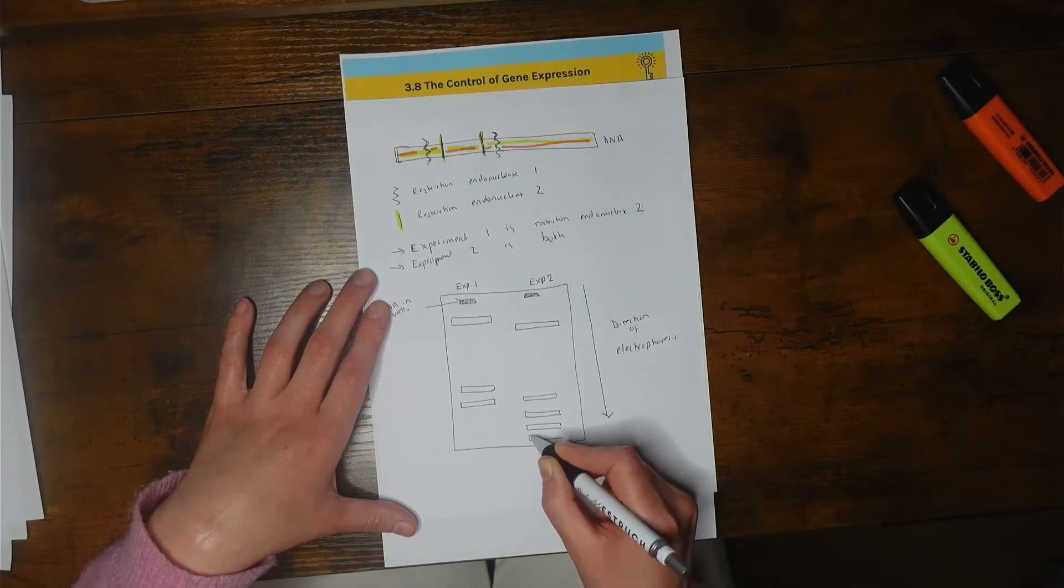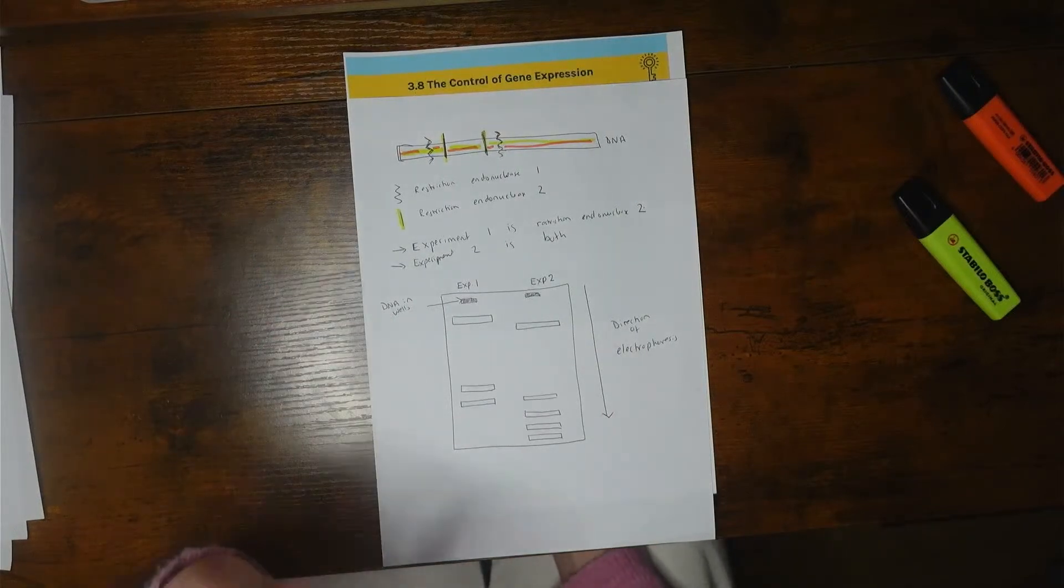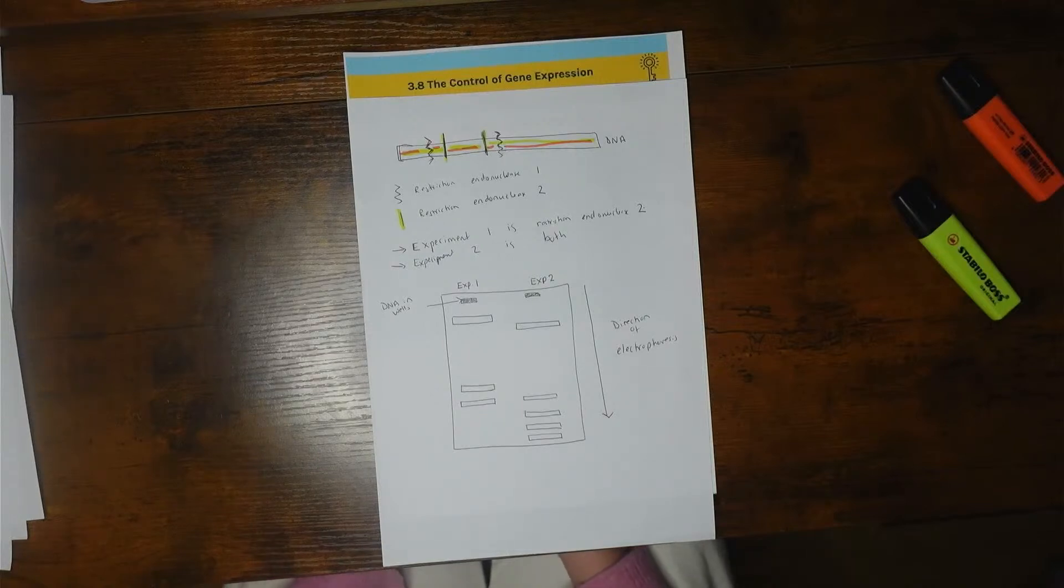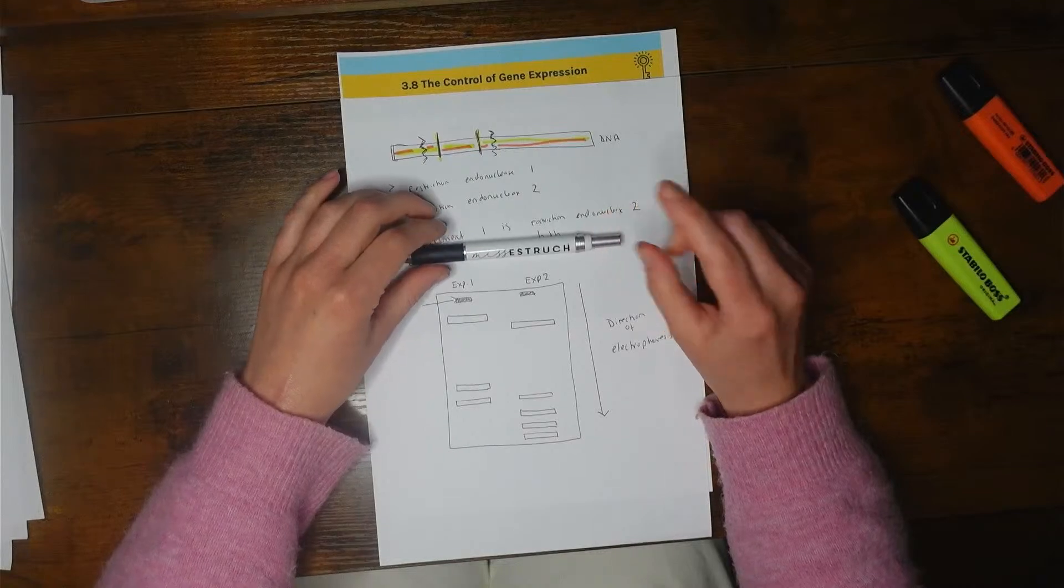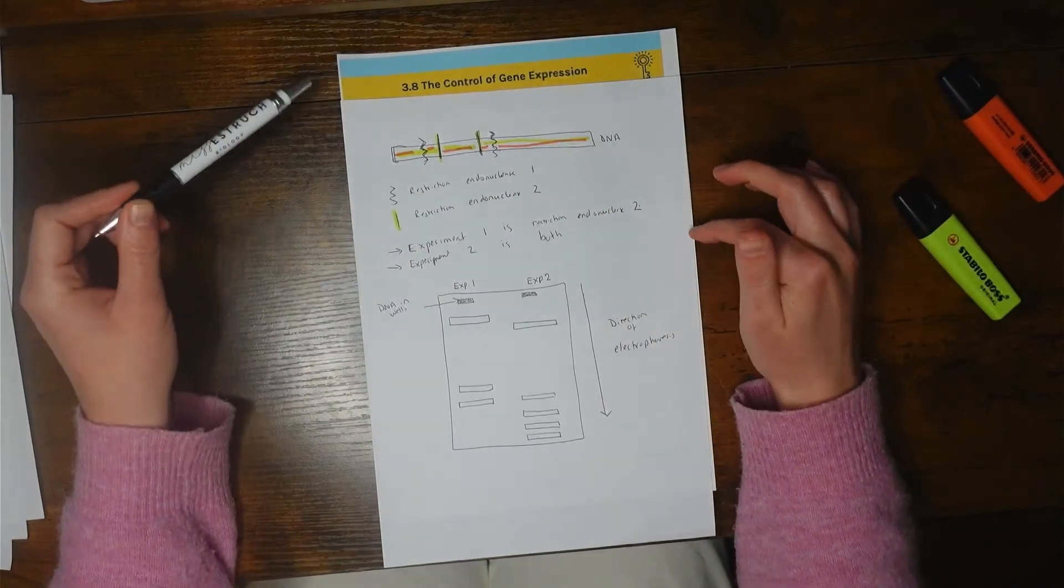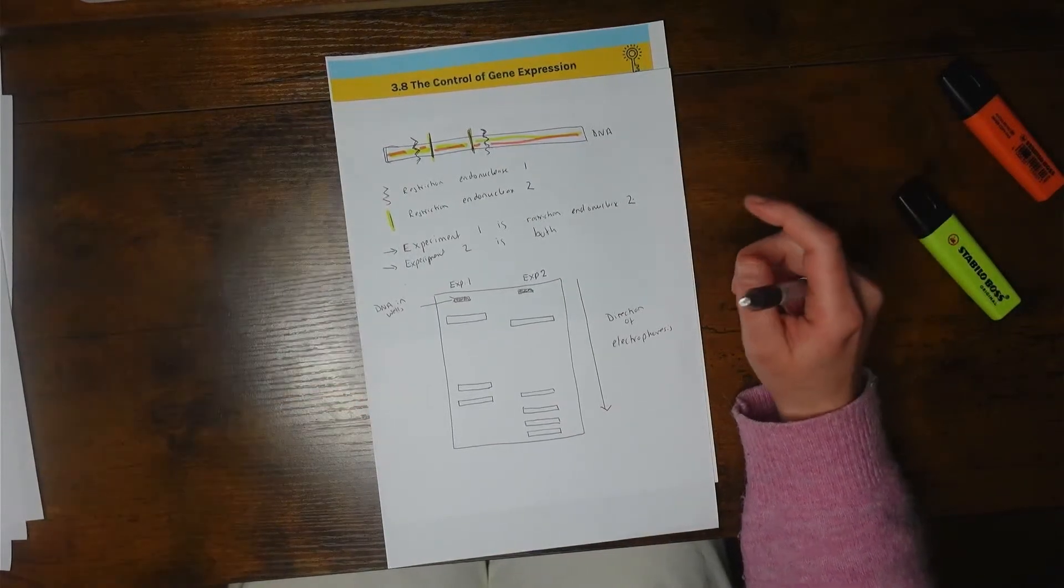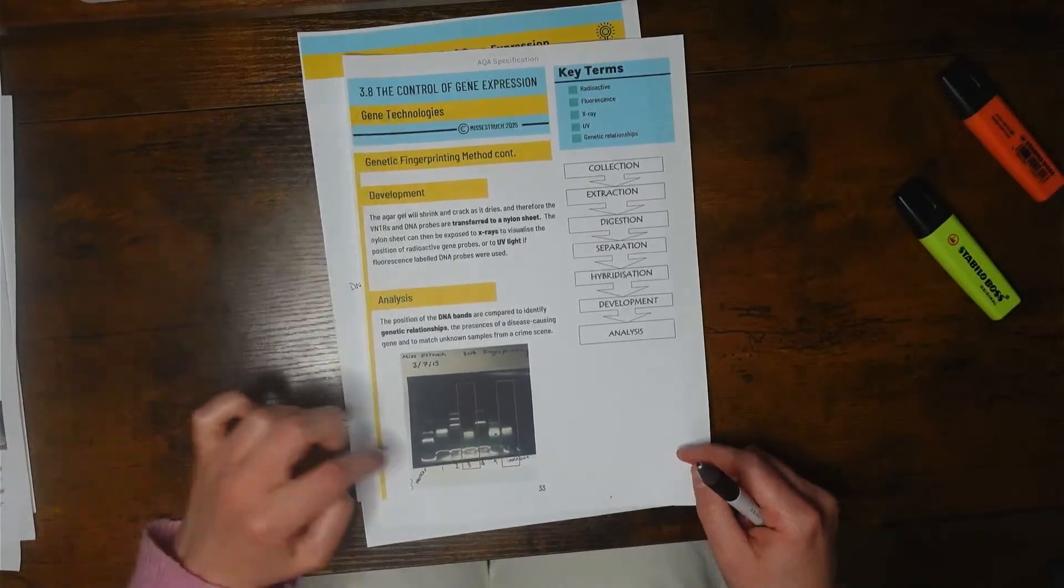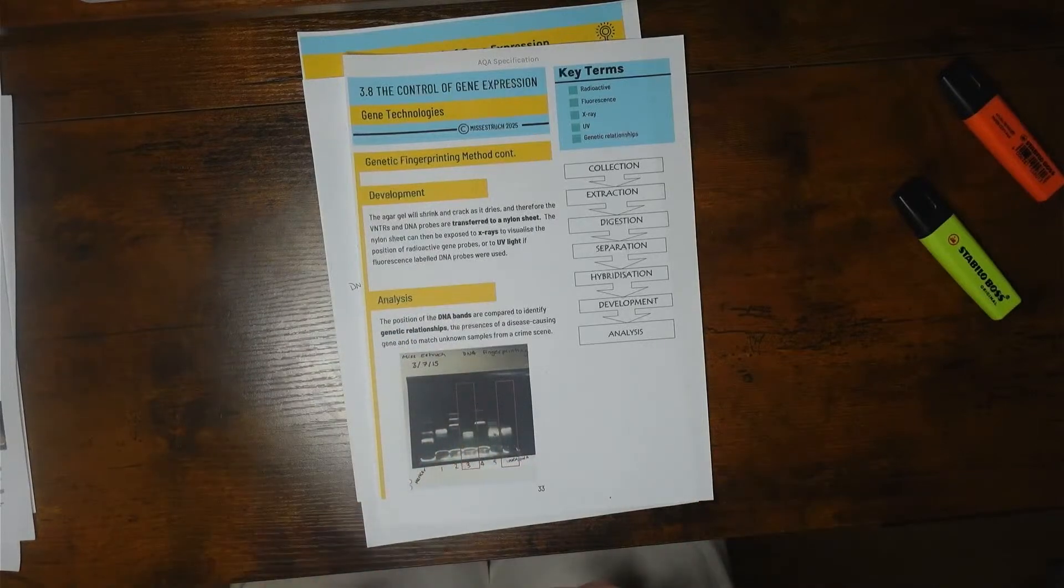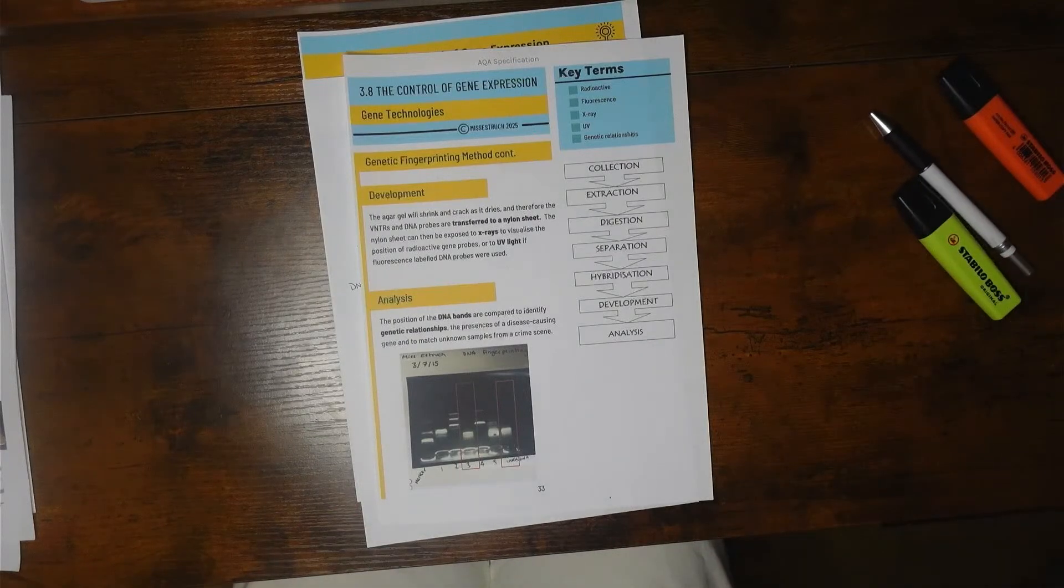There we go, so that is how you answer a question like that on gel electrophoresis and restriction endonucleases. I hope you found that helpful, that little mini recap on genetic fingerprinting, gel electrophoresis briefly, and then this exam question which is from 3.8 gene controlled expression. This was actually more to do with gene technologies and looking at the analysis after gel electrophoresis.